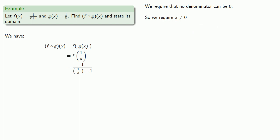And then this whole thing, 1 over x plus 1, is also a denominator. And so we require that 1 over x plus 1 can't be 0.